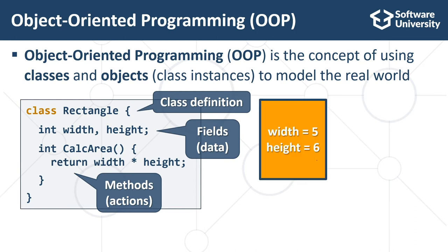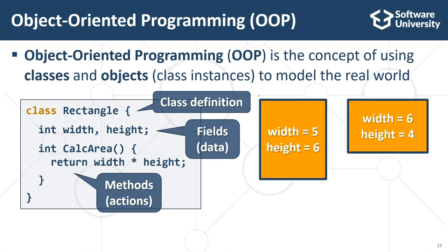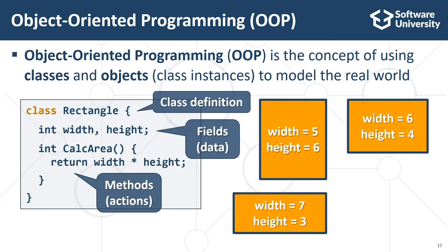The first object is a rectangle with a width of 5 and a height of 6. We have another object which has a width of 6 and a height of 4. And finally, this object has a width equal to 7 and a height equal to 3. We have one class Rectangle and three objects — we also call them instances — of this class.